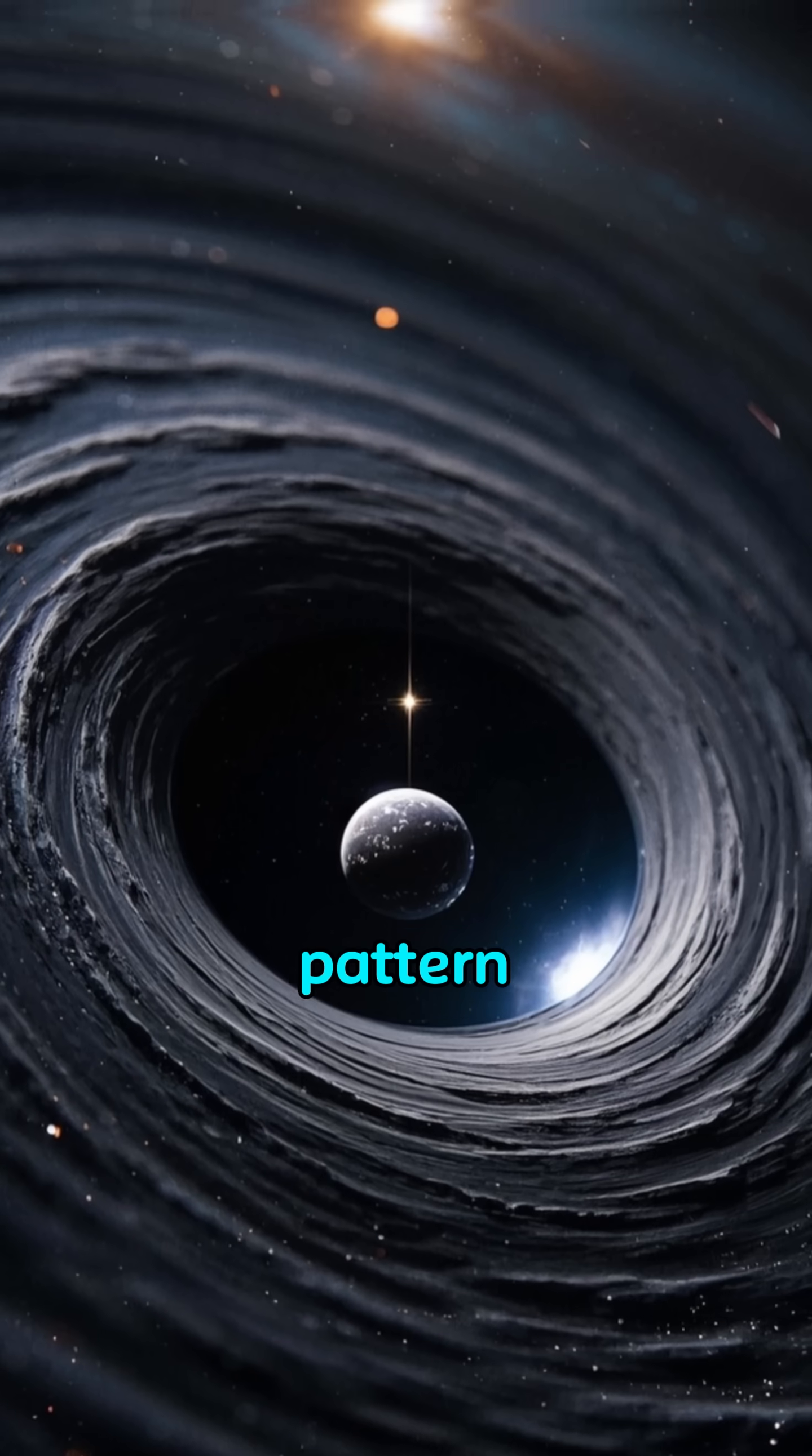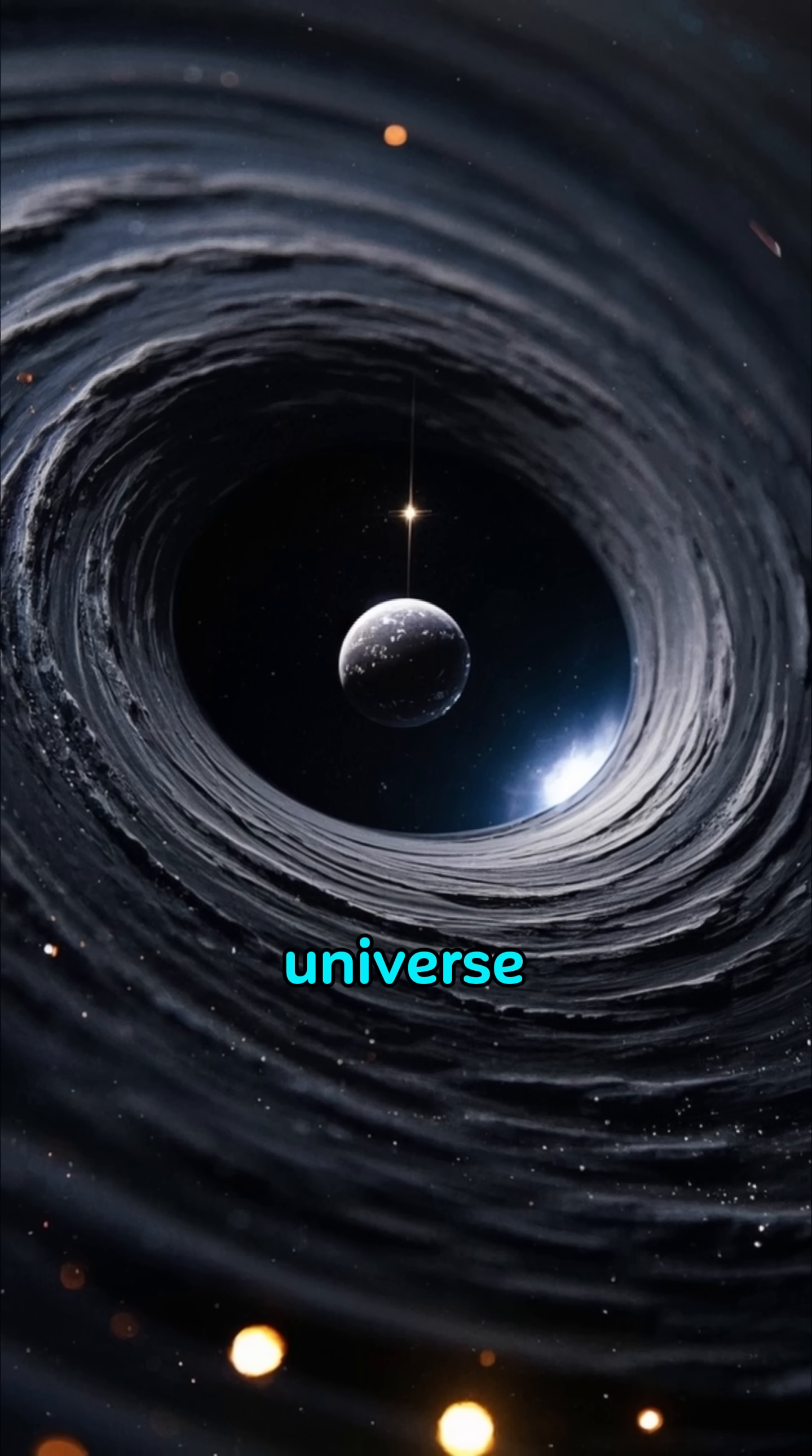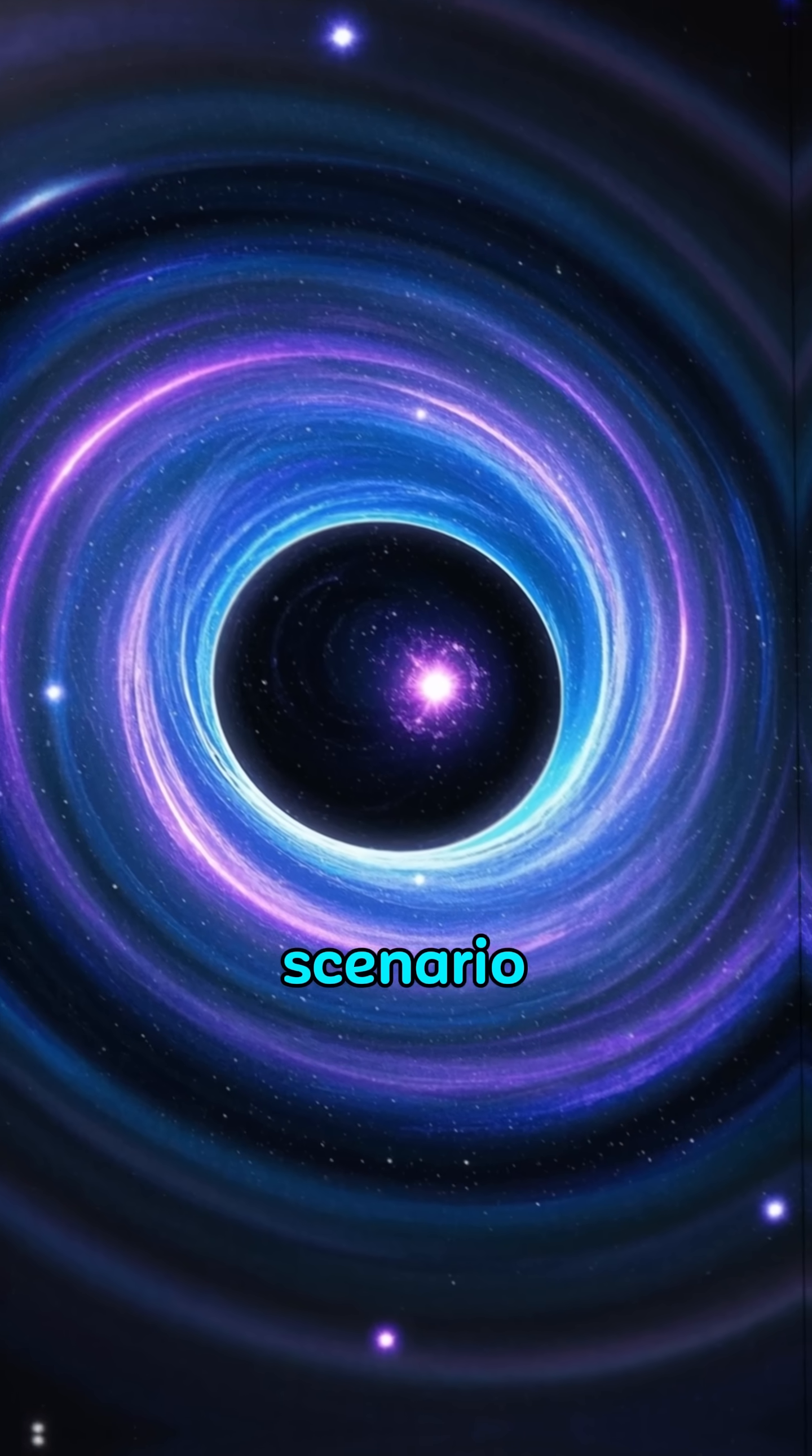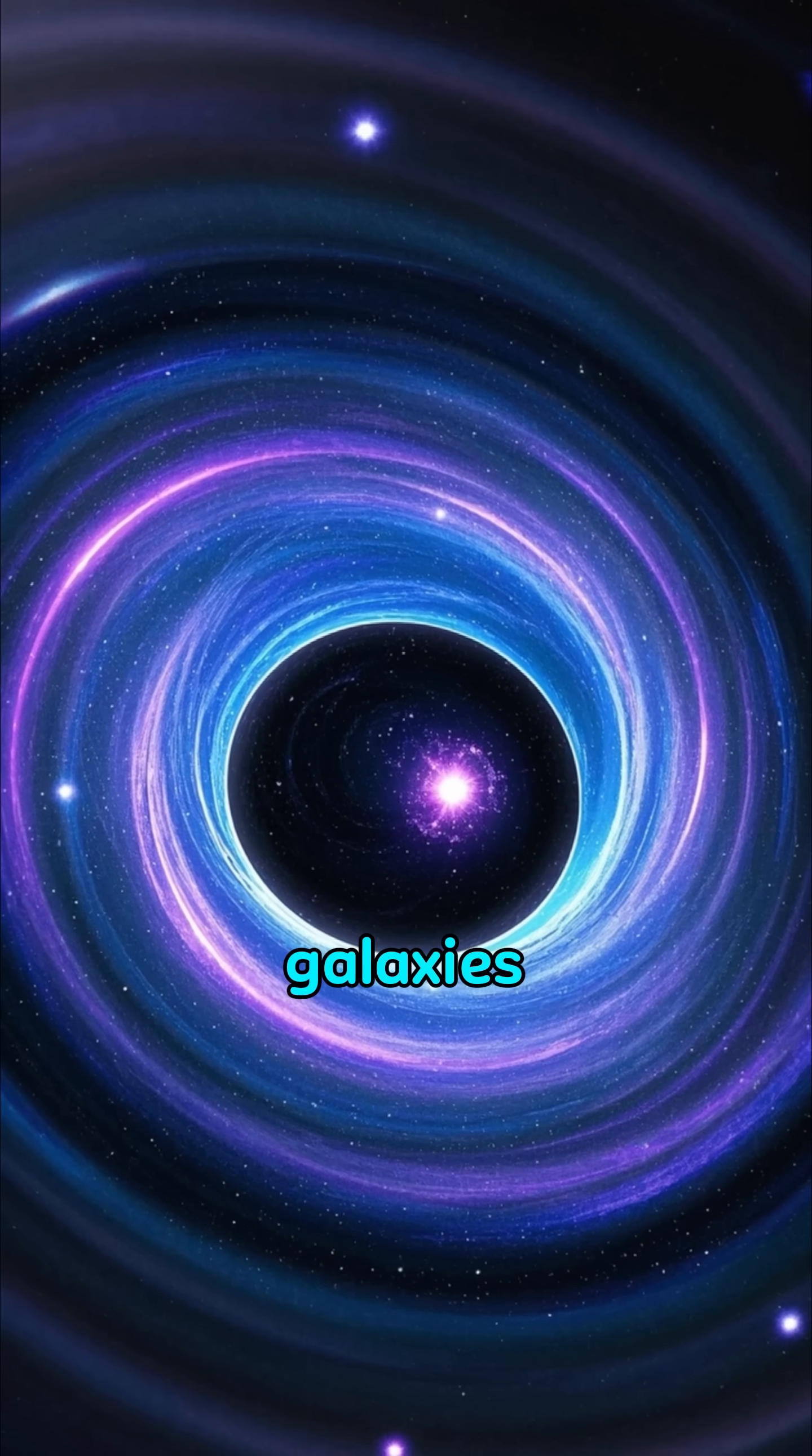This unexpected pattern lends credence to the black hole cosmology theory, suggesting our universe might reside within the event horizon of a massive black hole in a parent universe. In this scenario, the spin of the parent black hole could influence the rotational dynamics of galaxies within our universe.